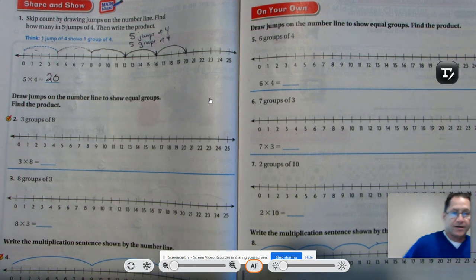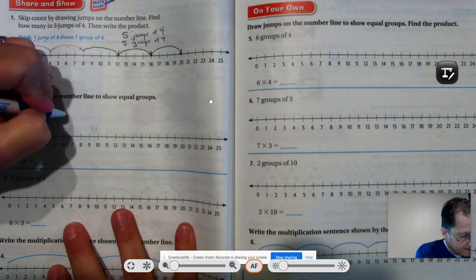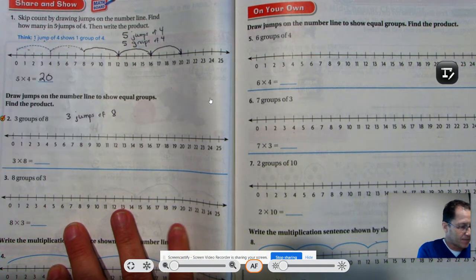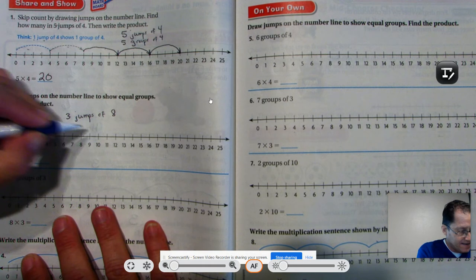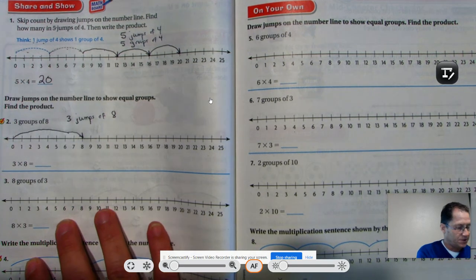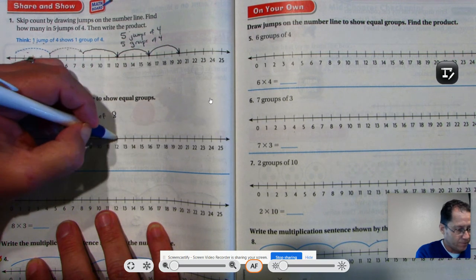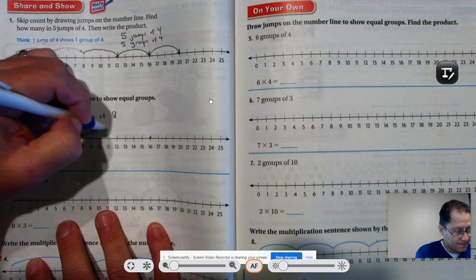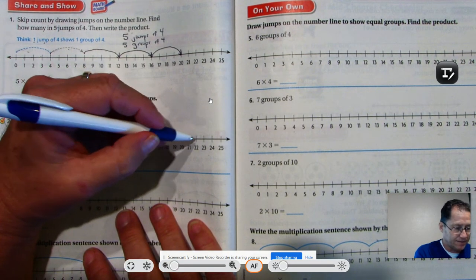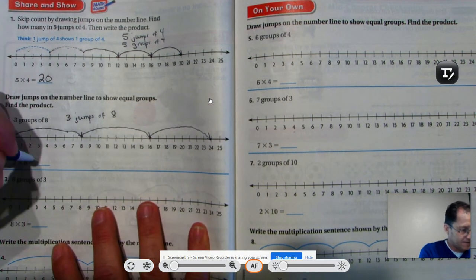Draw jumps on the number line to show equal groups. Find the product. We want three groups of eight, which is the same thing as saying three jumps of eight. So we start at zero, we go to eight. That's our first jump. We need to make three jumps: one, two, three, four, five, one, two, three, four, five, six, seven, eight. Three jumps of eight. That's two jumps: one, two, three, four, five, six, seven, eight. Three jumps of eight is 24.